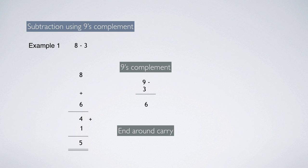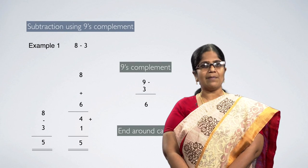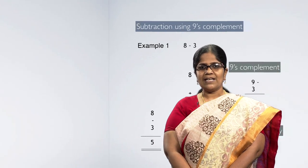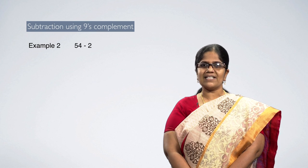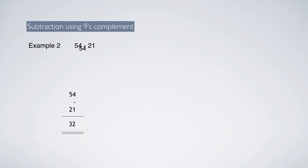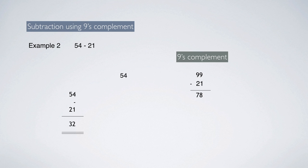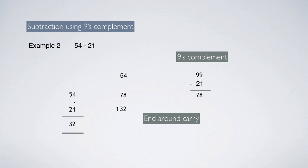In regular decimal subtraction also, 8 minus 3 is 5, and using 9's complement method the same answer 5 is obtained. Let us see another example: 54 minus 21 using 9's complement method. Find the 9's complement for 21: 99 minus 21 gives 78. Now we have 54 and 78. Perform regular decimal addition — the answer is 132. A carry is found. Perform end-around carry: 1 is added again with 32 and the answer is 33.